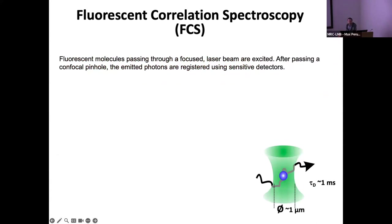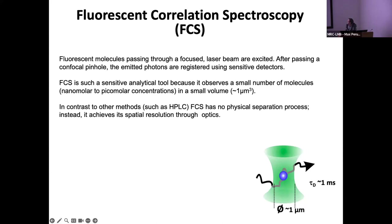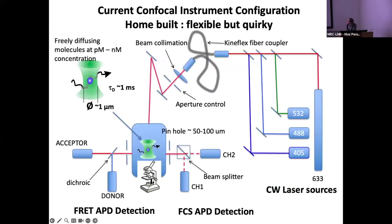FCS is Fluorescence Correlation Spectroscopy. We dilute the sample down, have a fluorophore on the protein or proteins of interest, and create a very small confocal-size volume, then look at fluctuations of fluorescence that enter into this illumination spot. It's a very sensitive technique using small numbers of molecules — not always single molecule, but certainly down to picomolar concentrations and tens to hundreds of molecules. In contrast to other methods there's no physical separation so we can look at molecules in physiological buffer, and spatial resolution is obtained purely using optics.